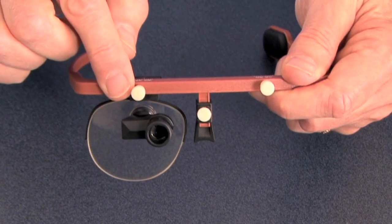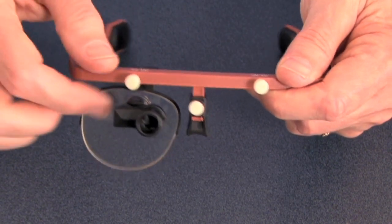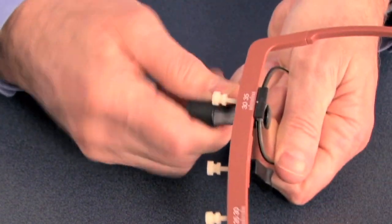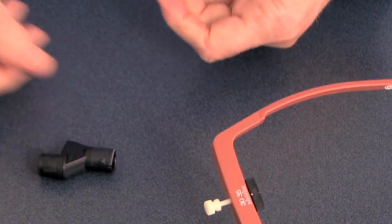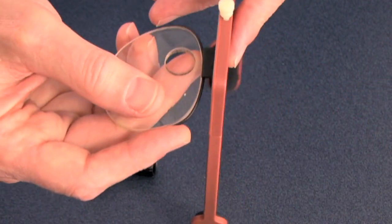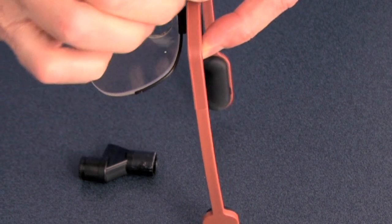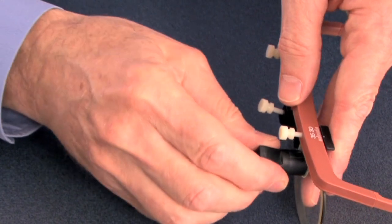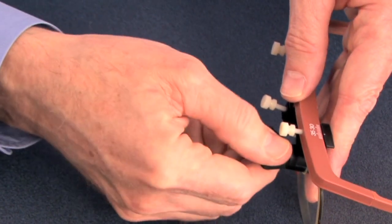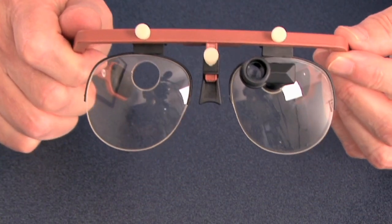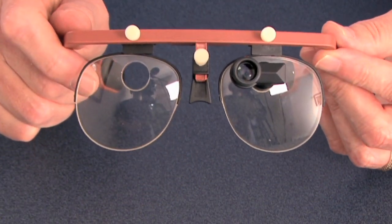As you can see here, it's positioned for the right eye. If you want to use it for the left eye, you can just take the telescope out of the lens, install the holder for the other side, and insert the telescope into the pre-drilled hole. Now you can demonstrate it for the other eye if you prefer to prescribe for the left eye rather than the right eye.